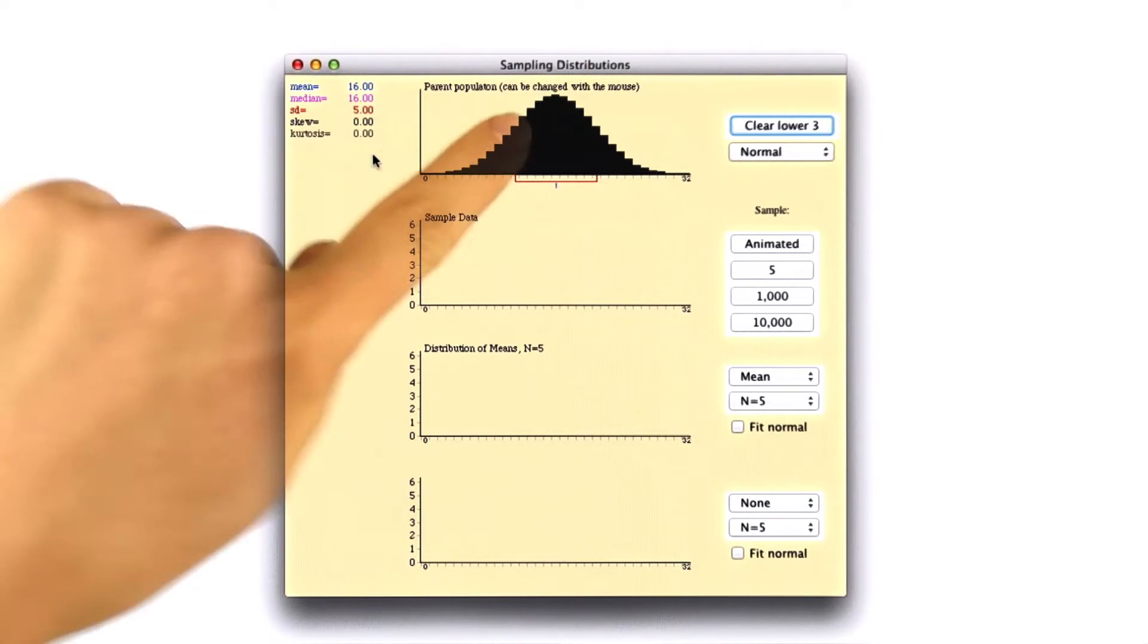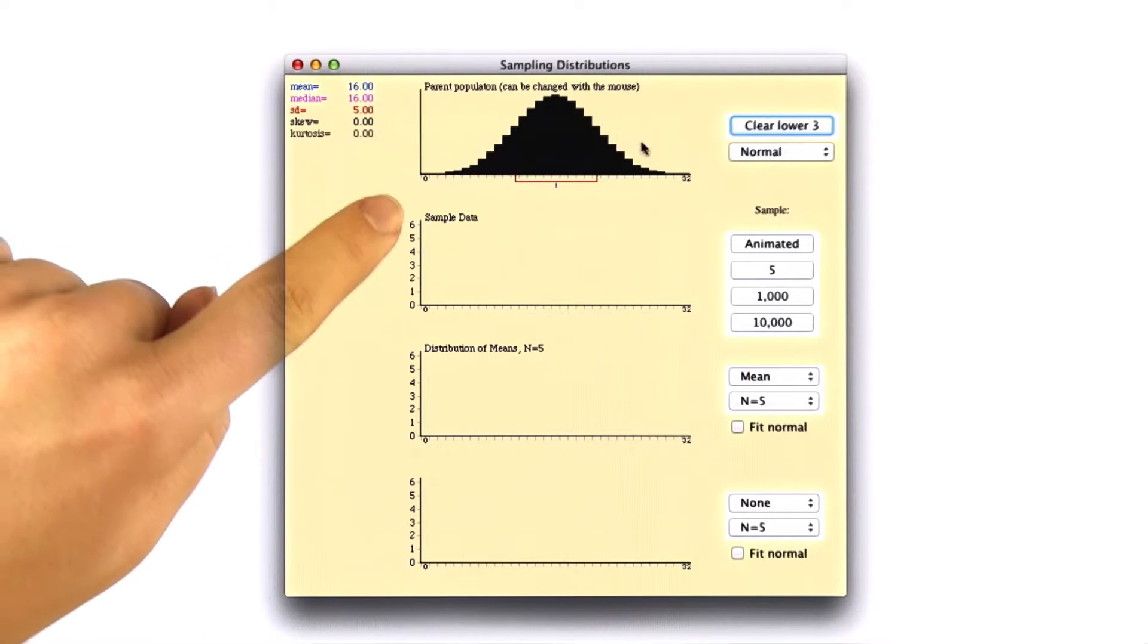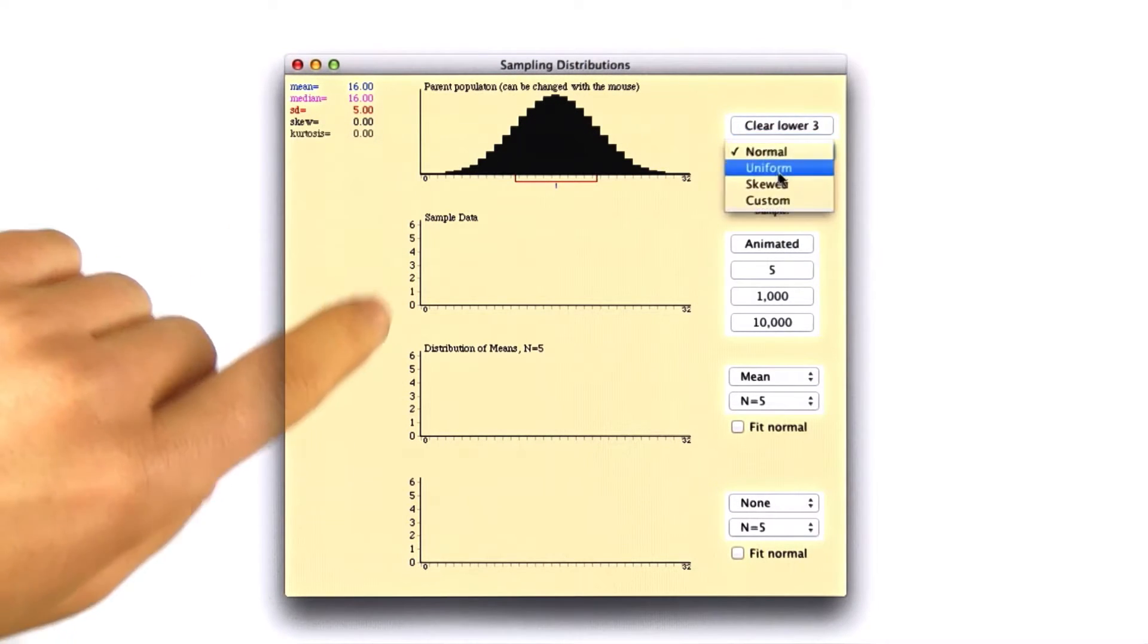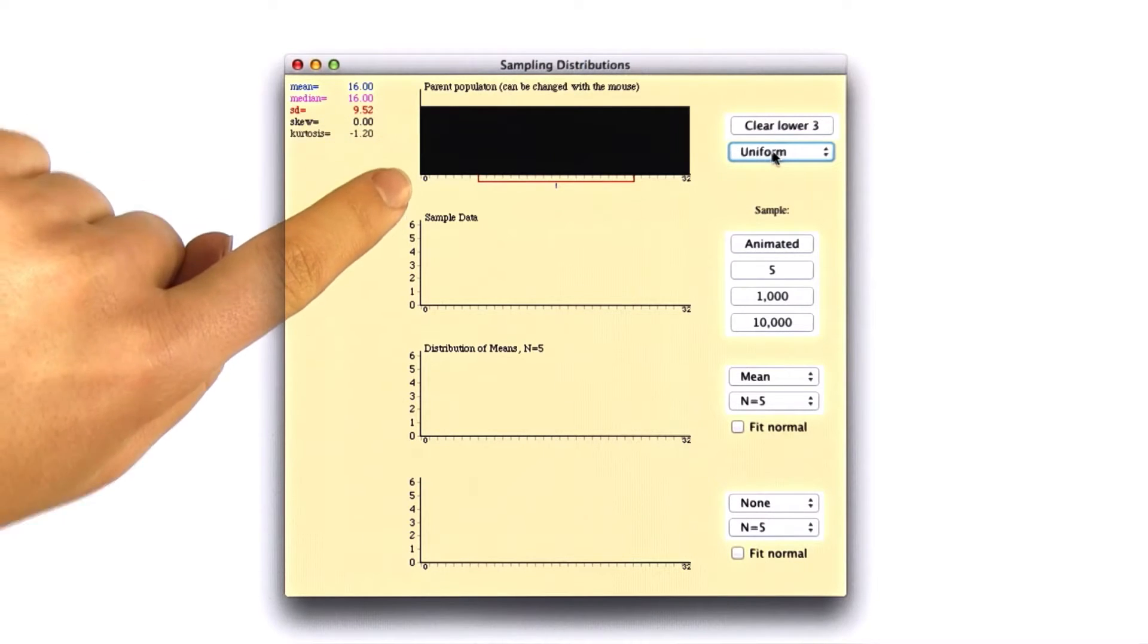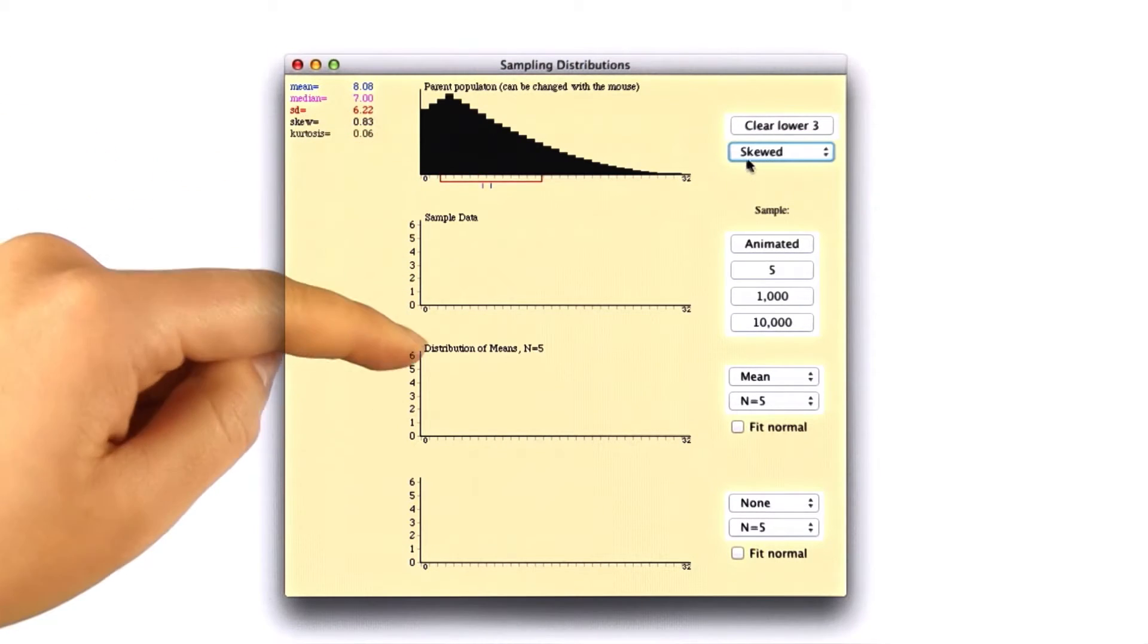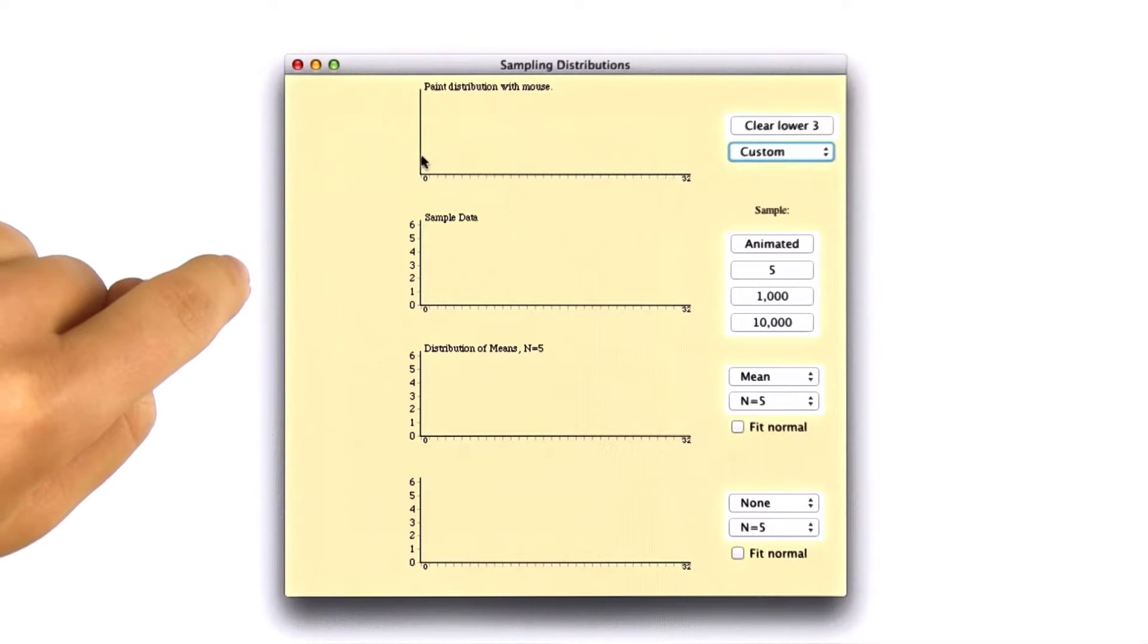So this time, you can start with a parent population being normally distributed, or you could start with a uniform distribution for the population, or skewed, or custom. You could draw a bimodal distribution.